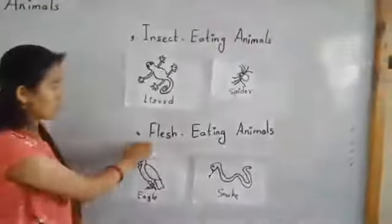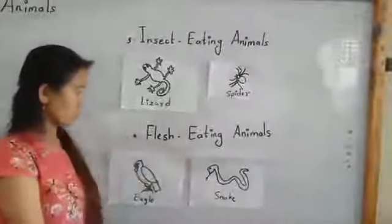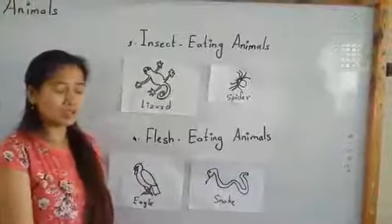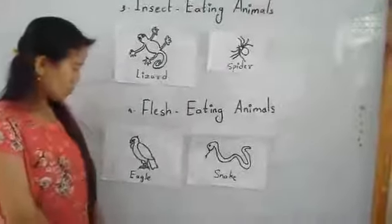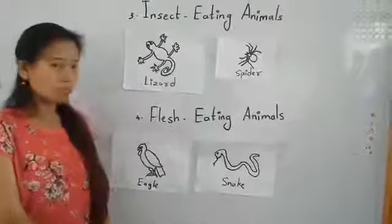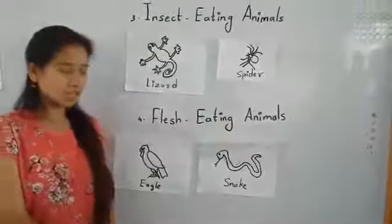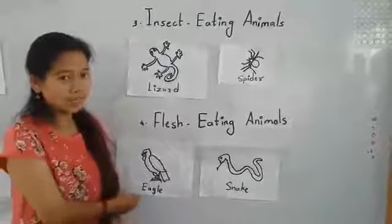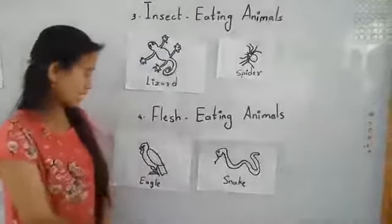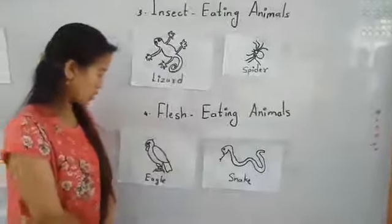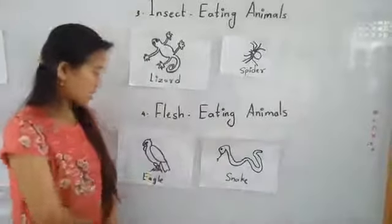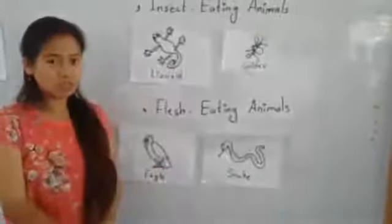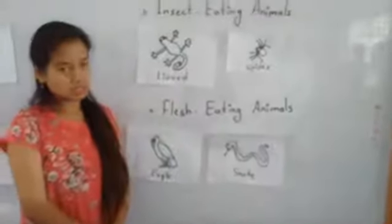And last, flesh eating animals. Some animals eat flesh, so they are called flesh eating animals. Like snakes, cats, etc.